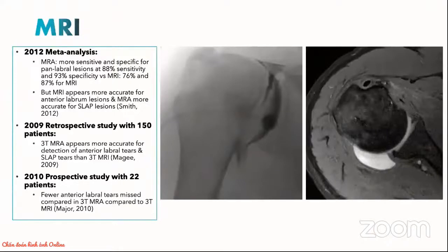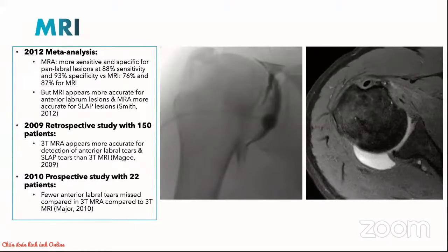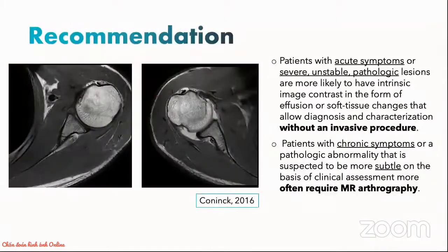On the other hand, to assess for any labral ligamentous injuries, we definitely need to do an MRI shoulder given the vastly superior soft tissue contrast. People often ask, can you get away with a simple routine MRI, or do you need to do an MRI with arthrogram to distend the joint so that you can diagnose labral tears more accurately? Well, the literature is slightly mixed, but most people do agree that by distending the joint, we will be able to make labral tears a bit more apparent and diagnose them with slightly more confidence. Clinicians will need to weigh the benefits of increased diagnostic confidence against the risk of an invasive arthrogram procedure.